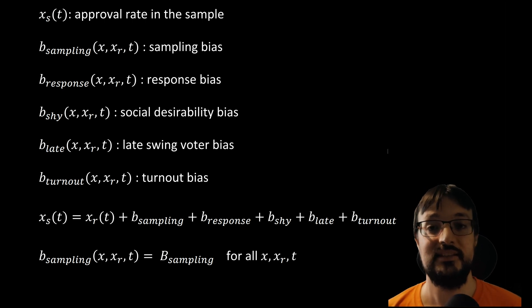How can we integrate all these quantities? One way to do so is to model x_s as x_s(t) equal to x_r(t) plus b_sampling, plus b_response, plus b_shy, plus b_late, plus b_turnout, and if you want, plus b_bad_faith, even though it doesn't change anything. Each function then needs to be modeled as well. This becomes quite complicated and for the purpose of this video, it is not really necessary. We can make the simplifying assumption of using the simplest possible model for the bias functions by just considering constants. So assuming, for instance, that b_sampling(x, x_r, t) is always equal to capital B_sampling, where capital B_sampling is just a number. This is not a particularly precise model, but it simplifies our life and it is enough for us to see that pollsters are not estimating x_r, but a biased approval rate x_s given by the contributions of all these biases.